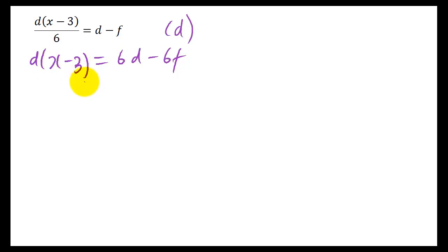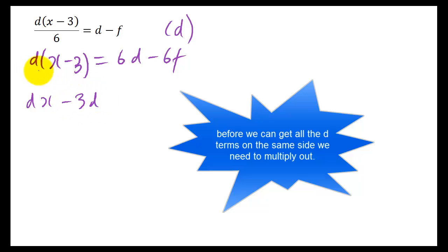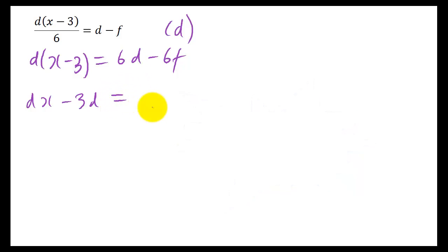Now we want to multiply out - we've got all the D's here, and we want to multiply these out so we can subtract the D's and get all the D's on the same side. So you've got D times X, times by 3D. You've got D times minus 3 gives you minus 3D. And that equals 6D minus 6F.